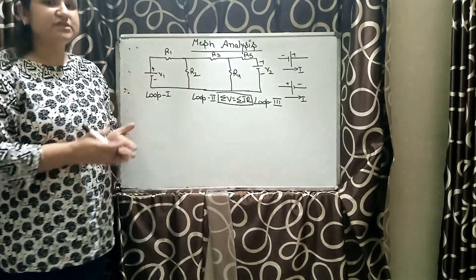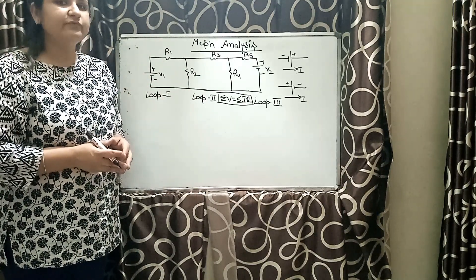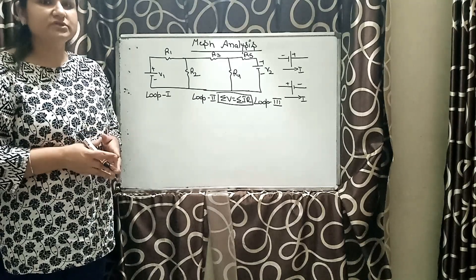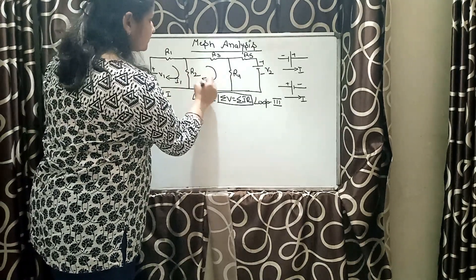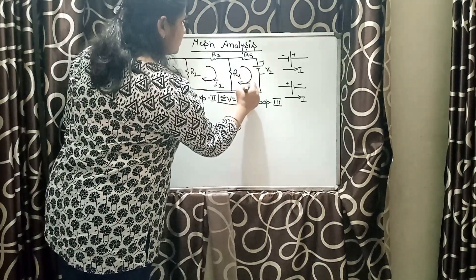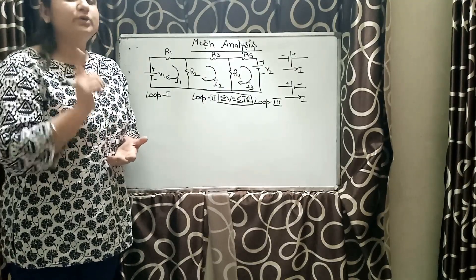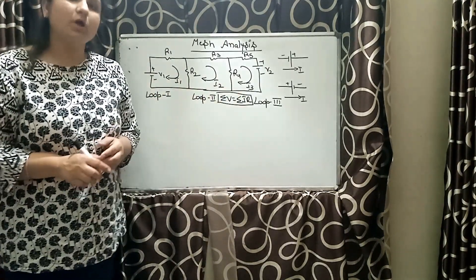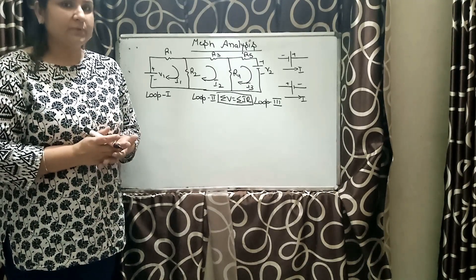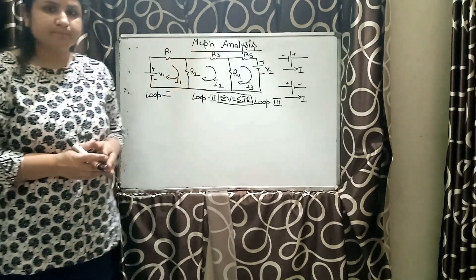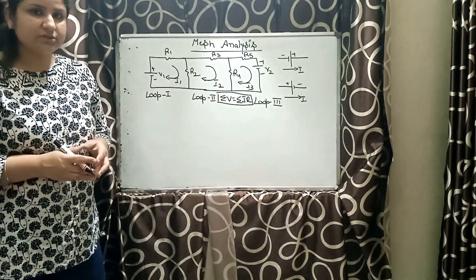Step number one in mesh analysis is to assume current in all the loops. In the example we have three loops, so let us consider currents I1, I2, and I3. Make sure to take the same direction for all the currents — clockwise or anti-clockwise, your choice — but it must be the same. This is a rule in mesh analysis.